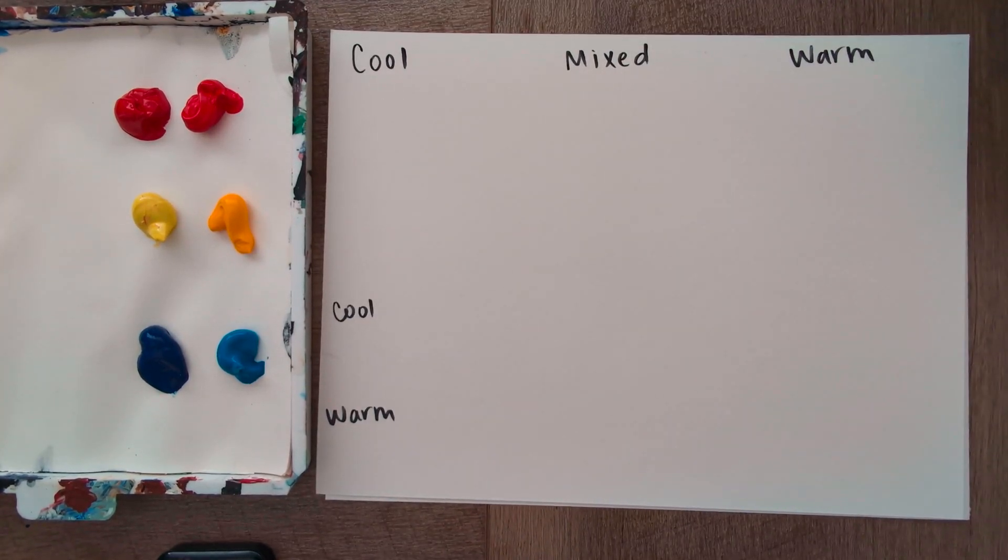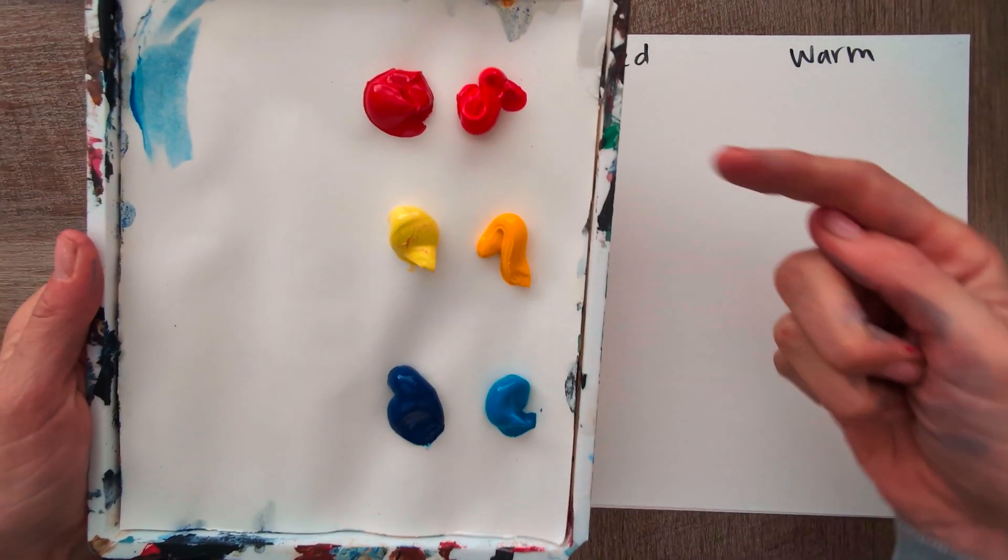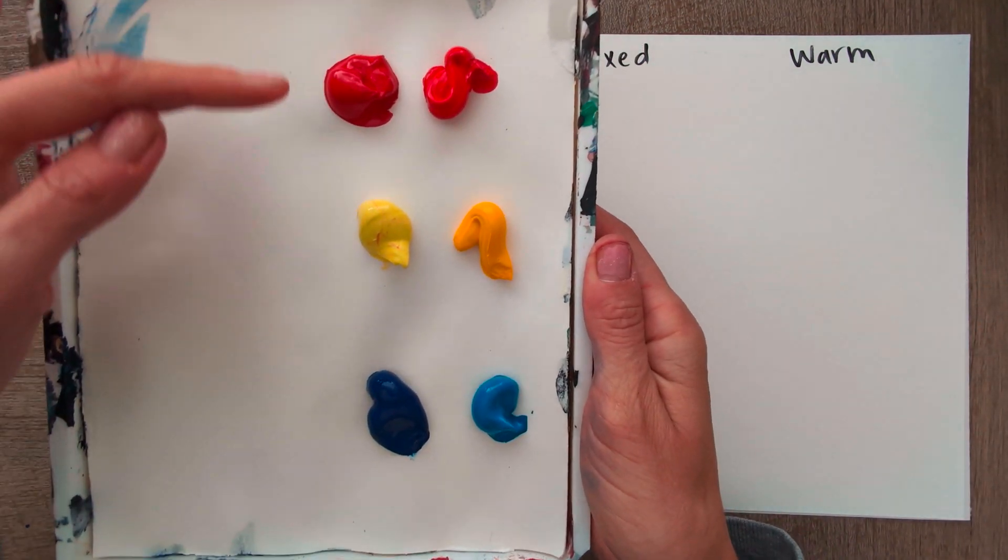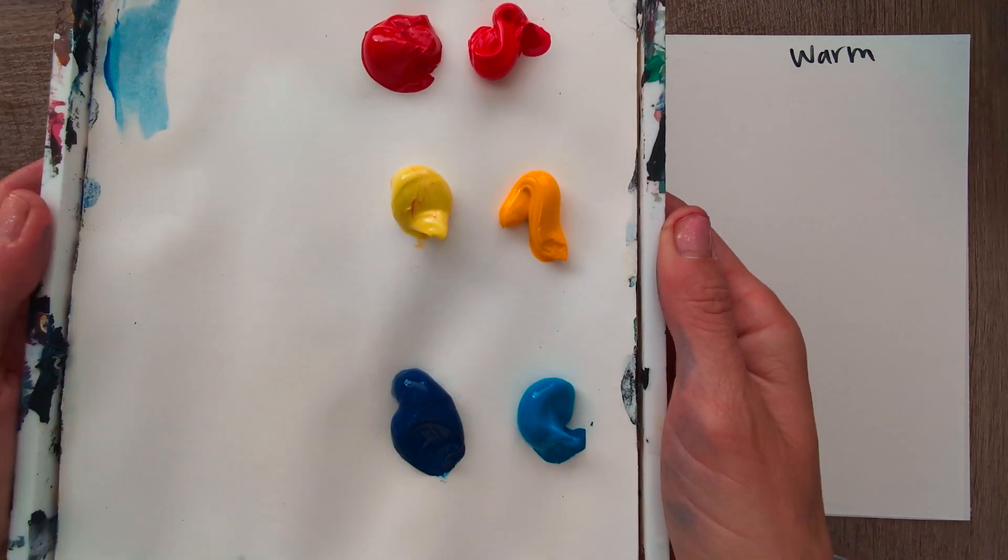Hi, so today we're going to go over the difference between cool and warm primary colors and then how we can mix them to get a more neutral version of those primaries. Here on this side we have the warmer versions and then this is the cooler versions. It's a little hard to tell with the red, hopefully you can see it well.